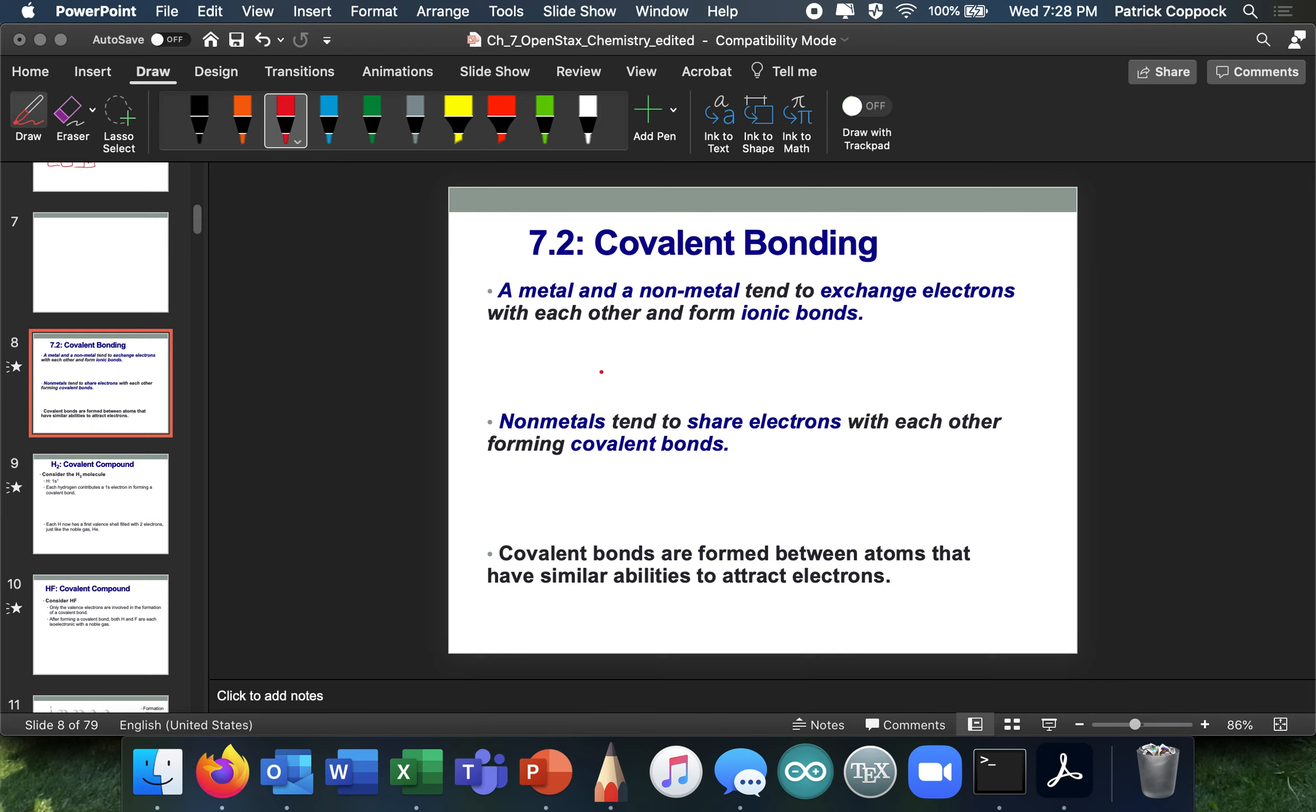Now, a metal and a non-metal have a tendency to exchange electrons and make ionic bonds. A metal and a non-metal. So you know where to find the metals, right? And you know where to find the non-metals.